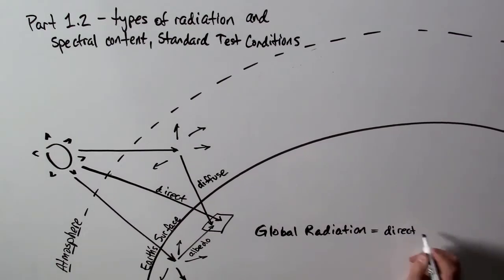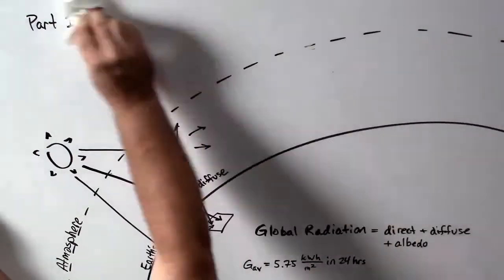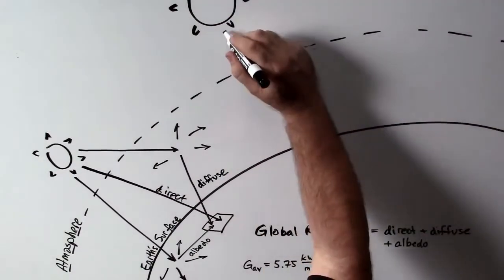So the total global radiation is the sum of these three: the direct radiation, the albedo, and the diffuse. The total energy received on that surface is about 5.75 kilowatt hours of energy per square meter in a 24-hour time period.